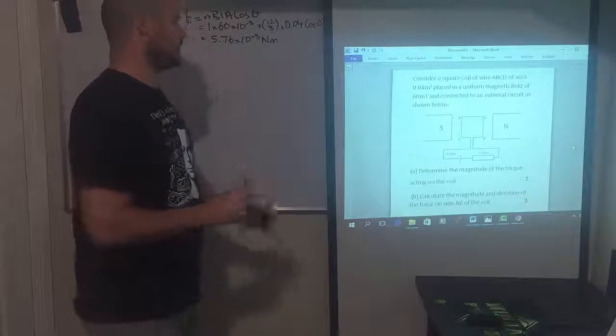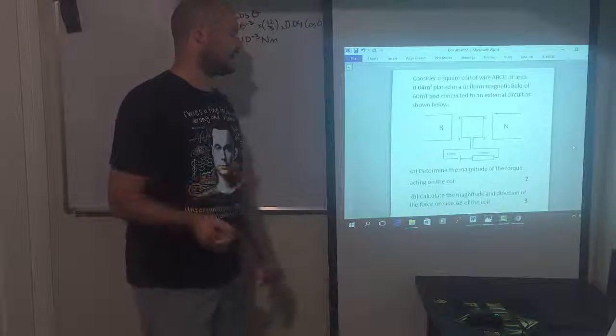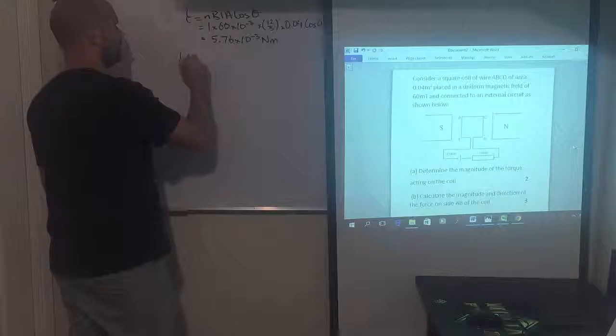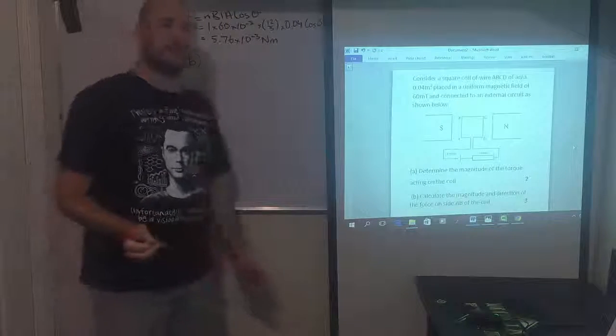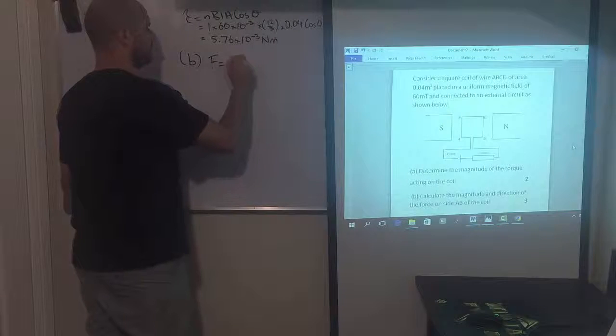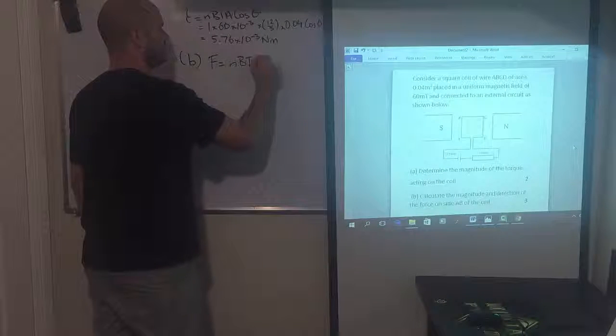For part B, just saying calculate the magnitude and direction of force on side AB of the coil. So part B, so this is just asking us to use that NBIL sine theta. So F is equal to NBIL sine theta.